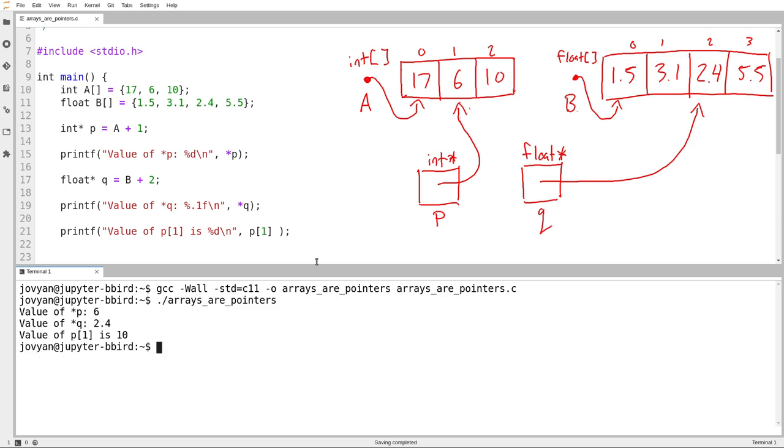And sure enough, P sub 1. So follow the arrow from P and walk ahead by one step. That's 10. And if I were to ask what is P sub 0, what I'm really saying is follow the arrow and walk ahead by 0 steps. And so I should just end up at 6.